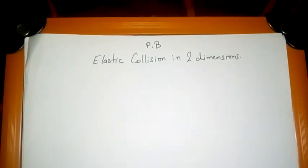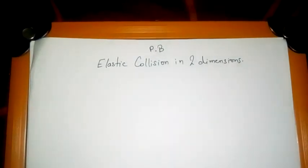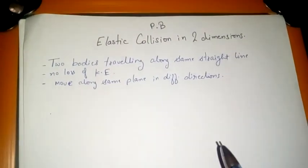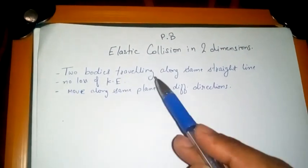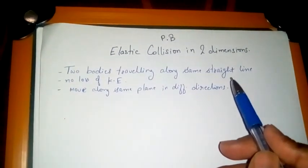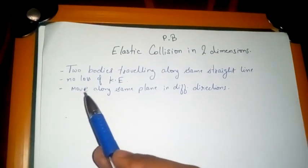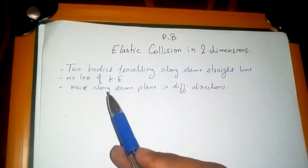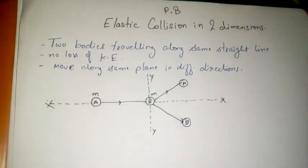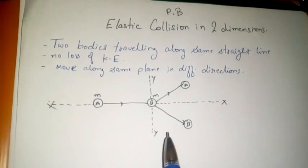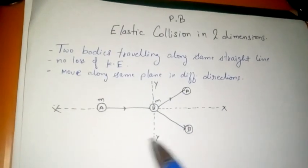Hello friends, this is Physics Boy and today we are going to discuss elastic collision in two dimensions. In elastic collision in two dimensions, two bodies travel along the same straight line, and after the collision they move along the same plane but in different directions.